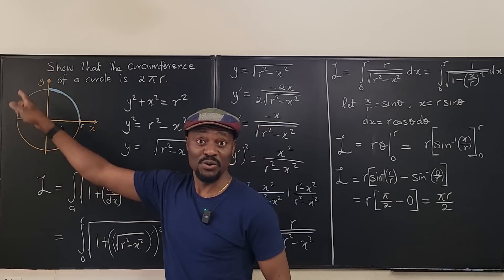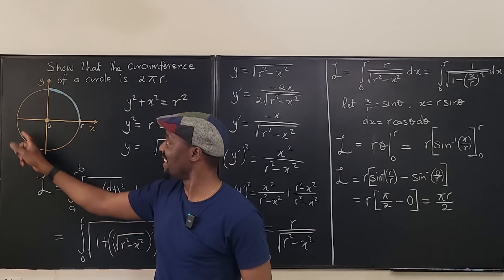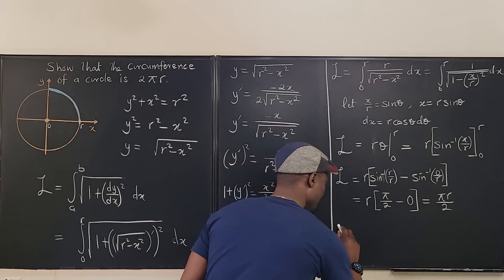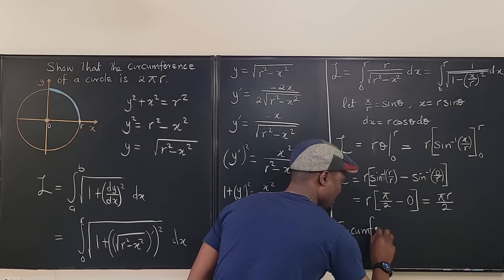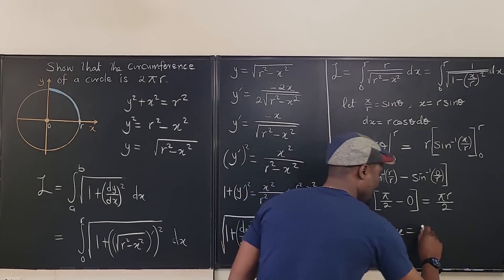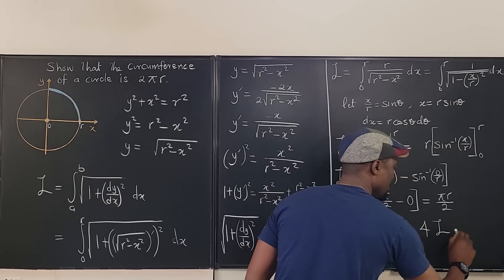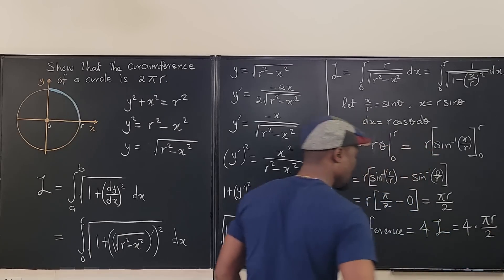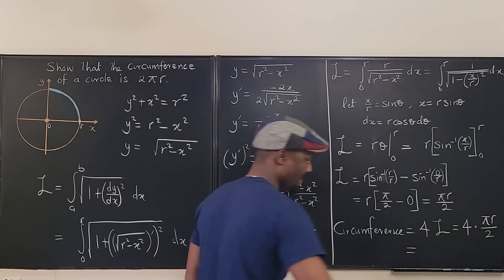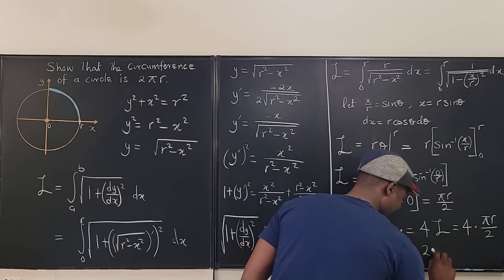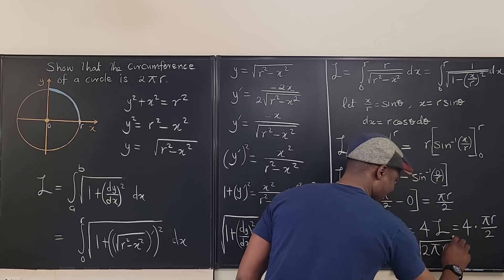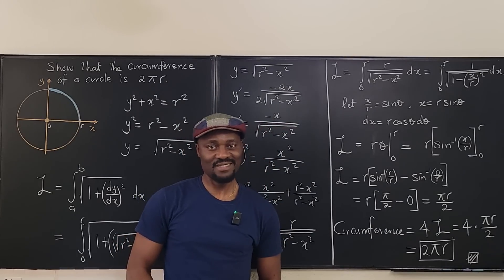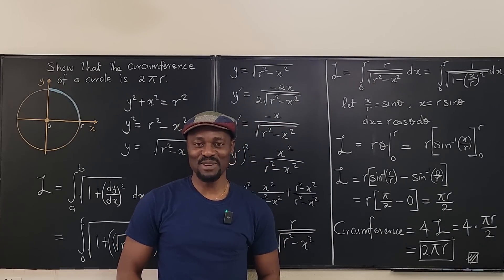We need four quarter arcs to complete the circle, so the circumference equals 4 times πr/2 = 2πr. Done! Never stop learning — those who stop learning stop living. Bye bye.